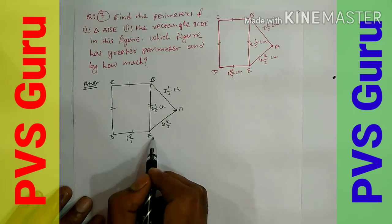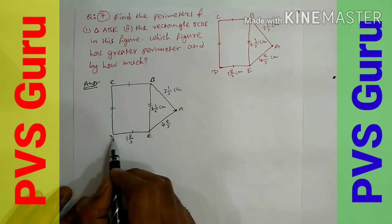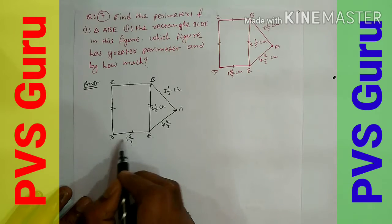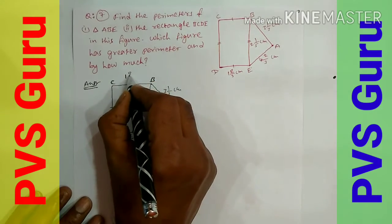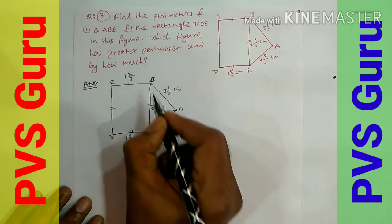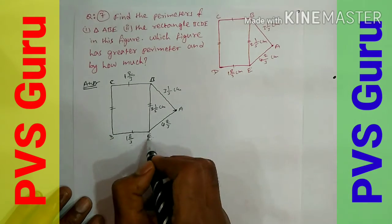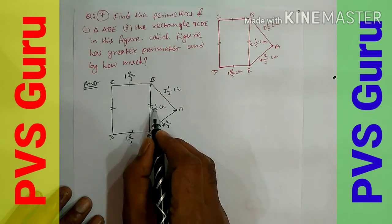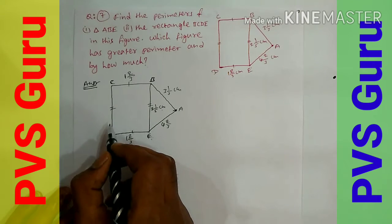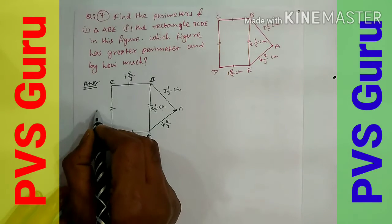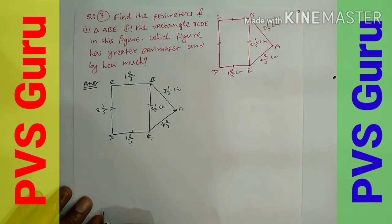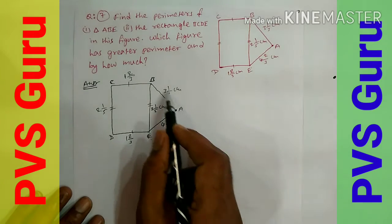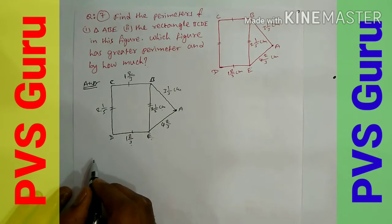From the figure, DE = 1 and 2/3 cm, CD = 1 and 2/3 cm (same as DE). BE = 2 and 1/5 cm, and BC = 2 and 1/5 cm (same as BE, since it is a rectangle). Now we have all the side lengths needed.